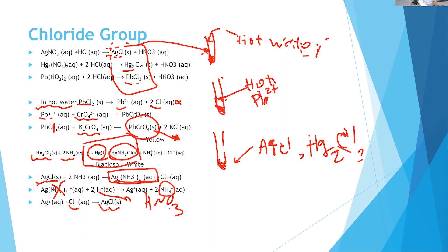For an unknown compound mixture, you follow the same procedure as for a known sample. You are testing for presence or absence of each ion, confirming that silver ion is present by adding enough nitric acid to produce a white precipitate again. For a known sample, the precipitate is expected; if it doesn't appear, something went wrong and you should repeat the experiment.